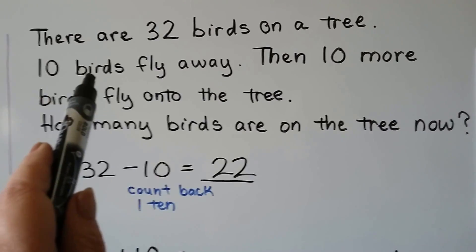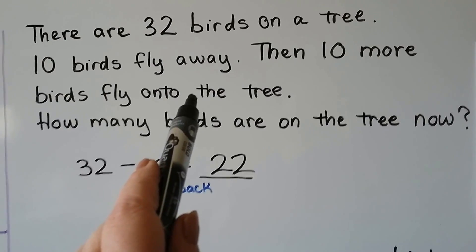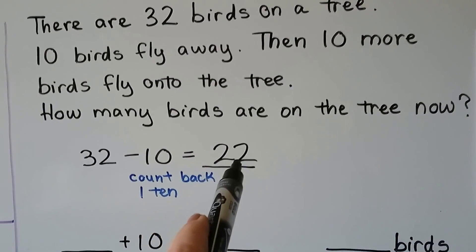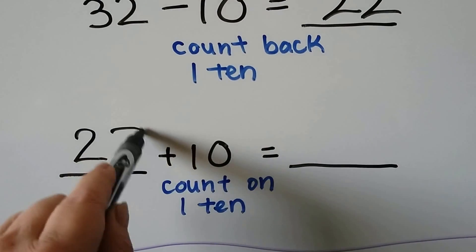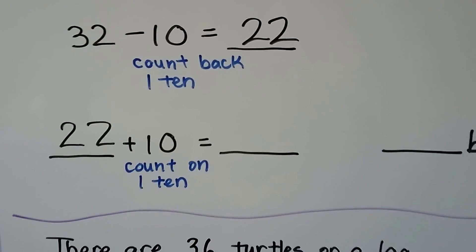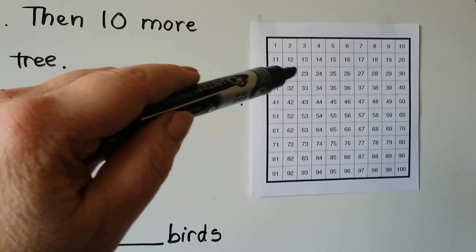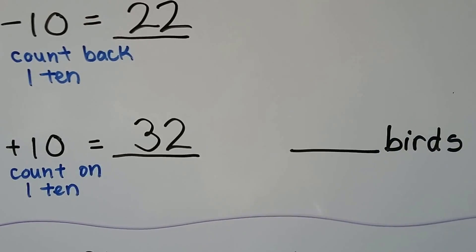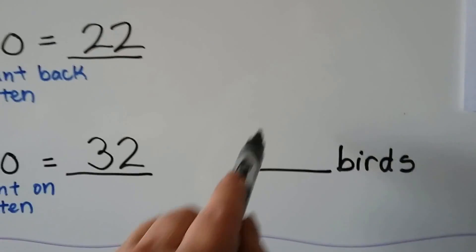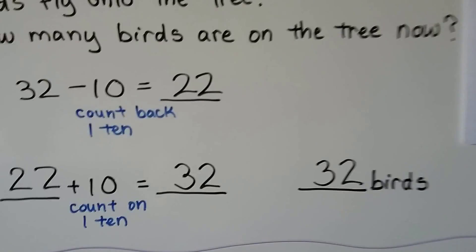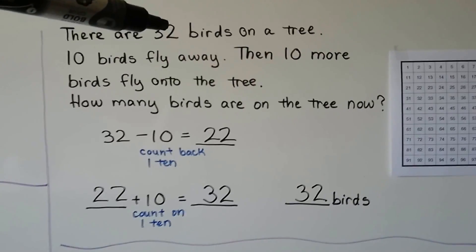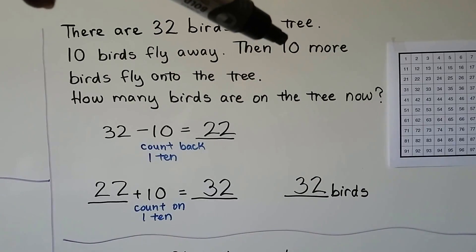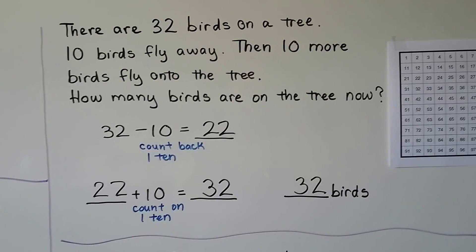There were 32 birds in the tree, ten flew away, and then ten more came back. After taking ten birds away we're at 22, but then ten more birds flew into the tree. So we have 22 plus ten more, and counting on one ten from 22 brings us to 32. How many birds are on the tree now? Thirty-two — the same number we started with. Ten flew away and ten more came, so it stayed the same.